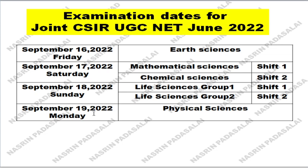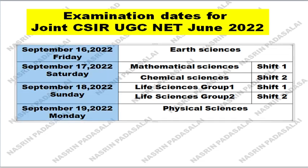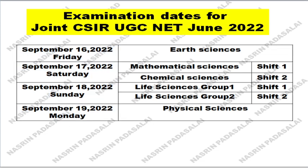Since September 20th to September 30th, UGC is going to conduct the examination, and in the first week of September, the CUET examination is going to be conducted. That is why they have given these particular dates for conducting the Joint CSIR UGC NET examination.